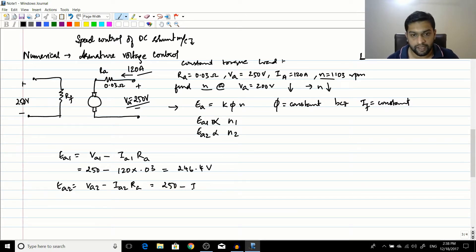It will be 200 - VA2 is 200 - minus IA2 into RA. Here is the roadblock because you don't know the value of IA2, and to find the value of EA2 you need the value of IA2, so there are two unknowns here. Let us see what is the information given - it is a constant torque load.